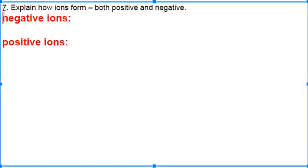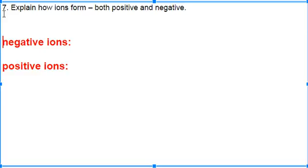Objective 7: Explain how ions form, both positive and negative. So ions are, what is an ion? What's the definition of an ion?